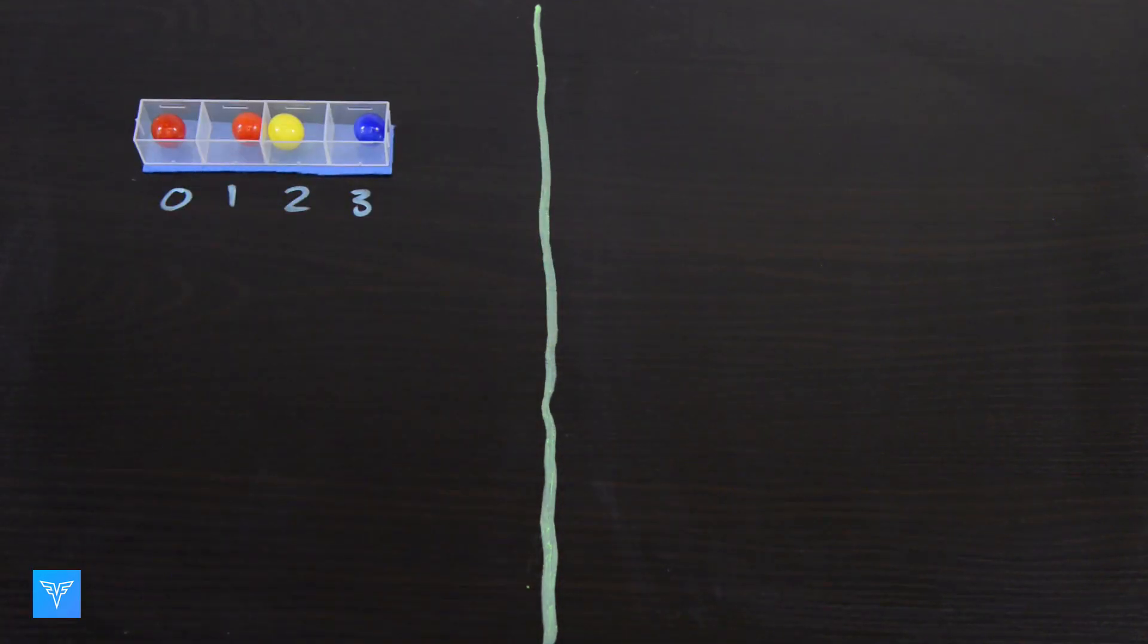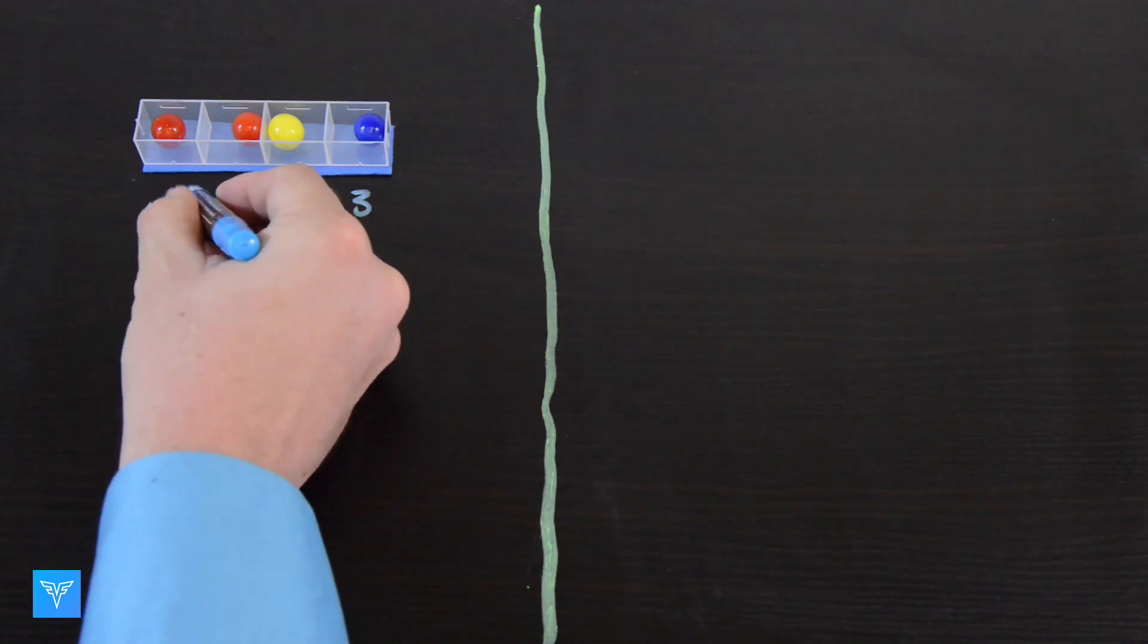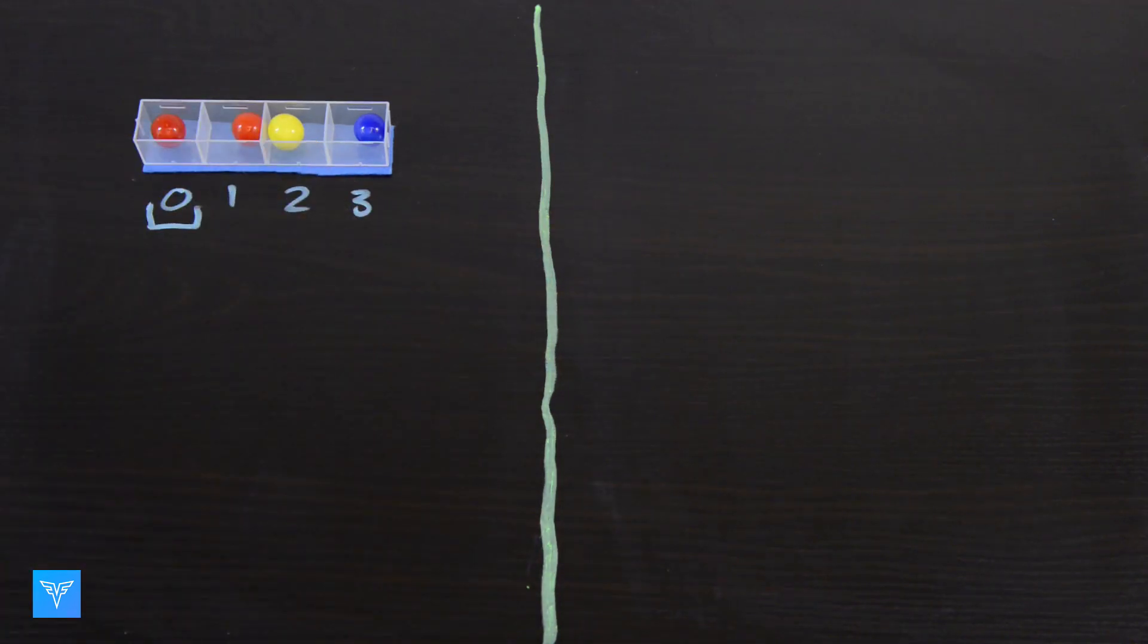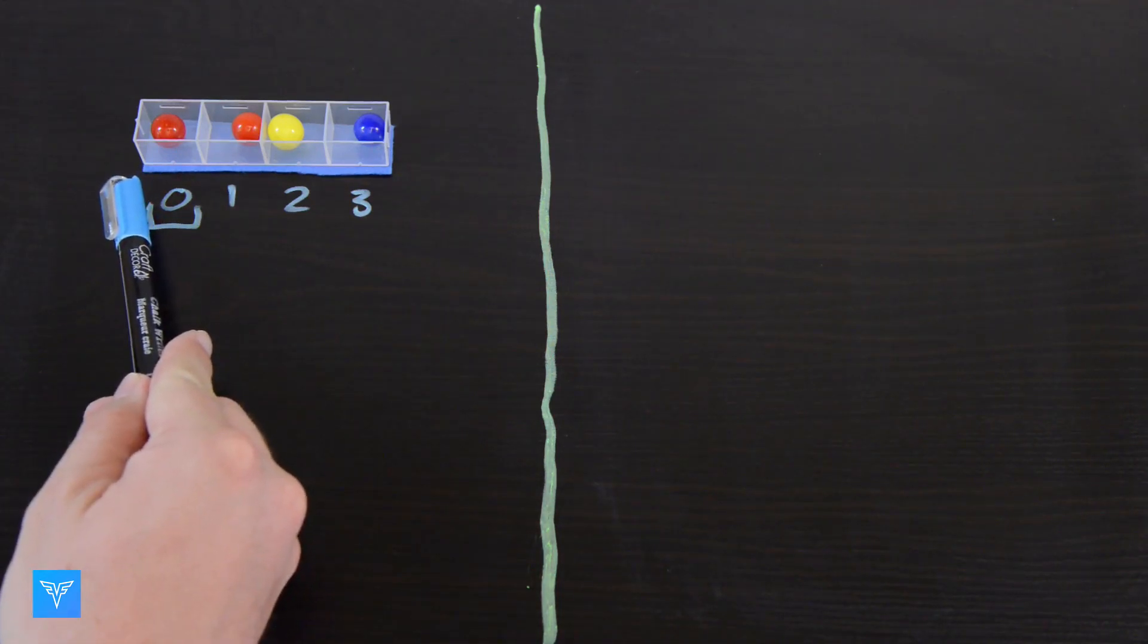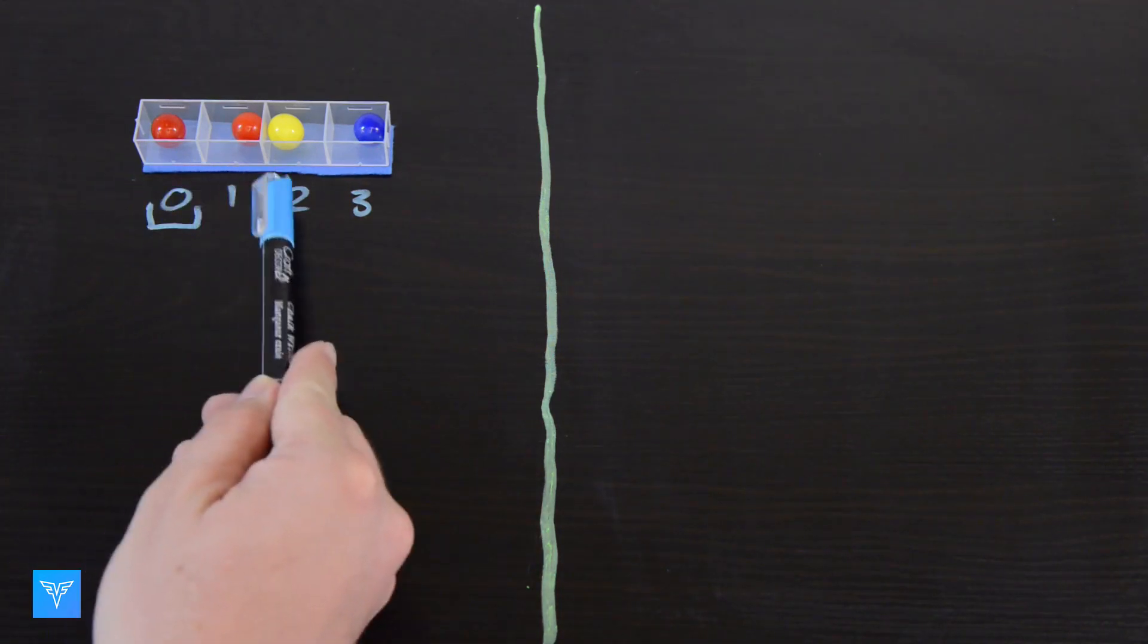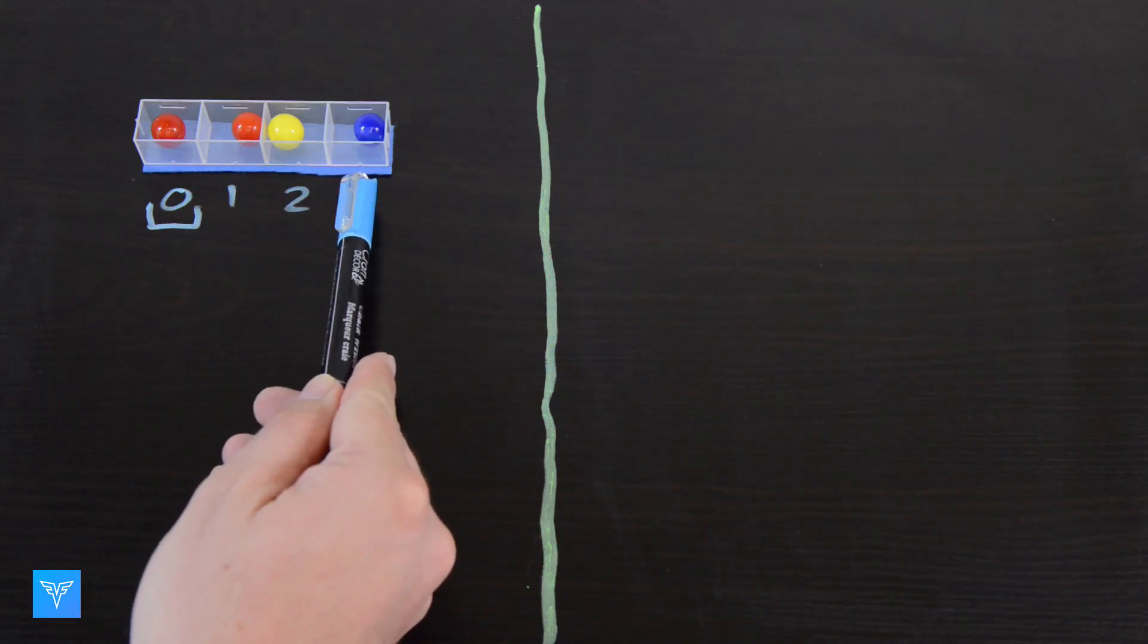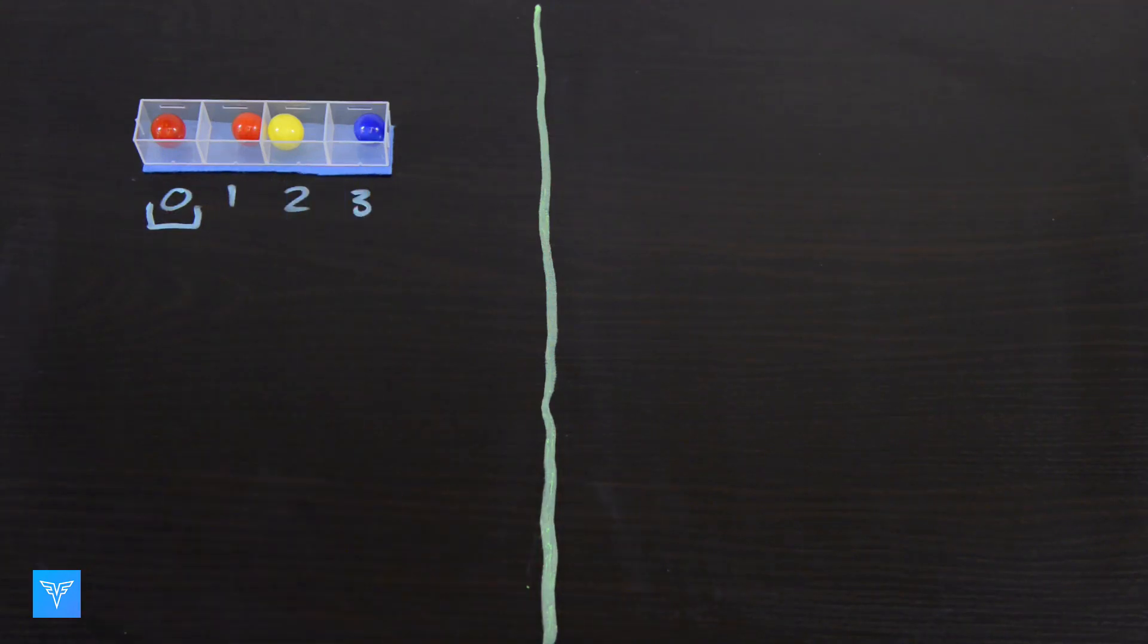By knowing where the array starts in memory and the size of each individual variable, it is easy to use the index to find the variable immediately. If we want to check the color of the marble at index 3, we can start at the beginning of the array, move down three spaces, and discover that the marble with index 3 is blue.